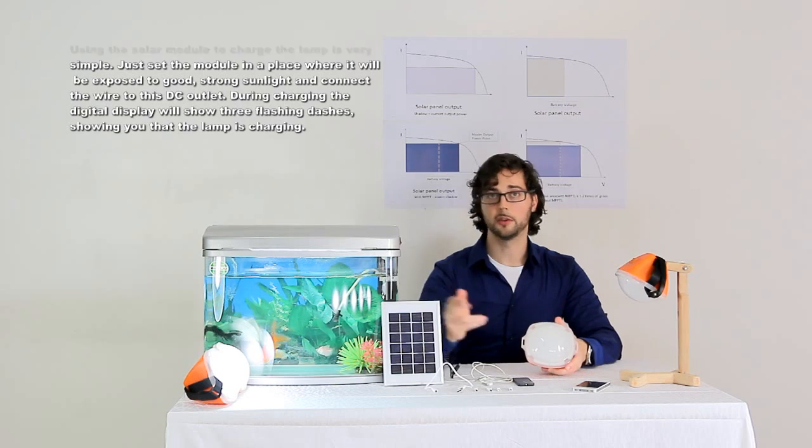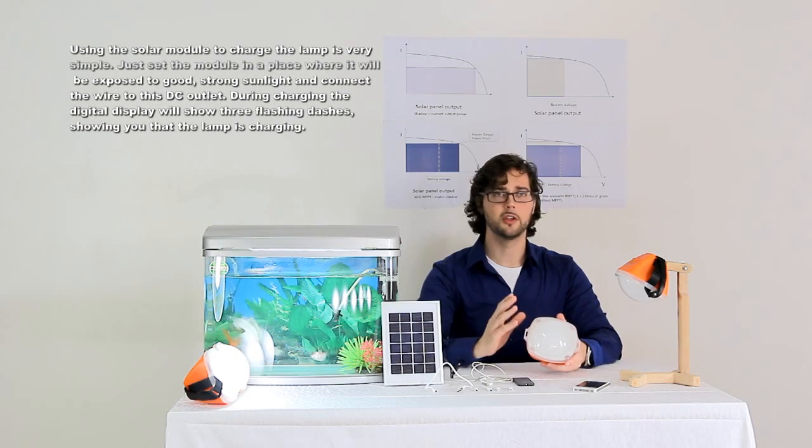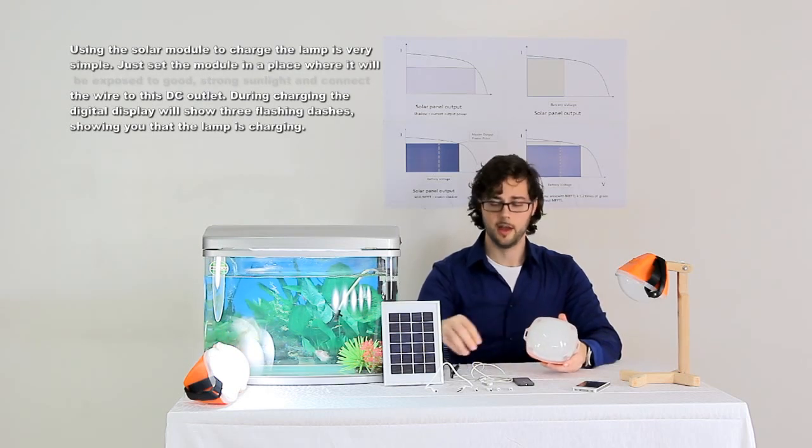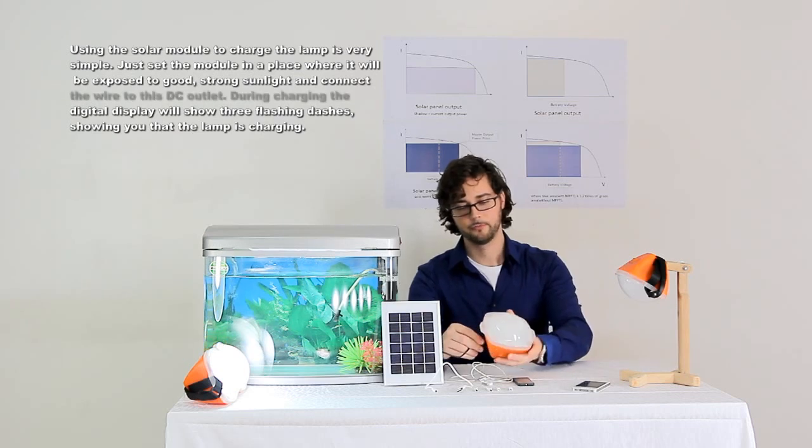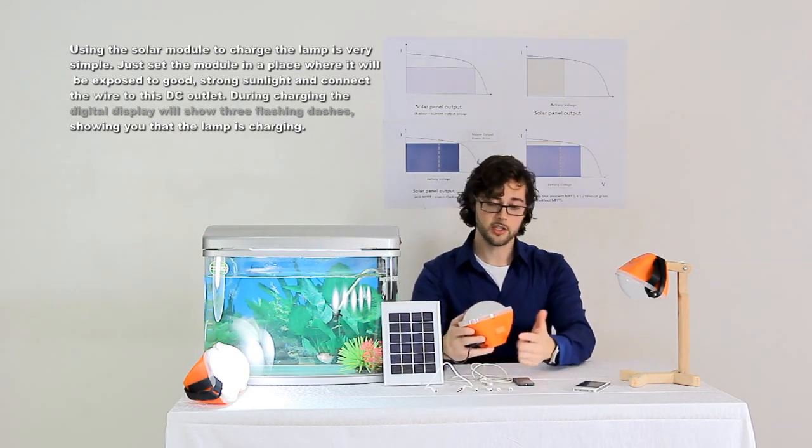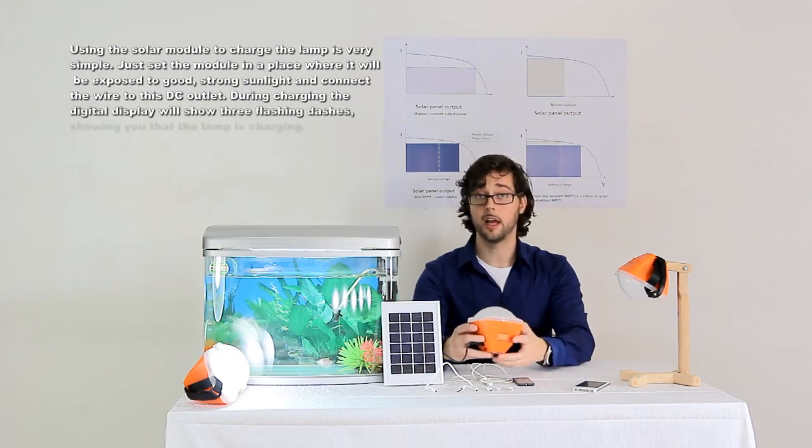Using the solar module to charge the lamp is very simple. Set the module in a place where it will be exposed to good, strong sunlight, then connect the wire to this DC outlet. During charging, the digital display will show three flashing dashes, showing you that the lamp is charging.